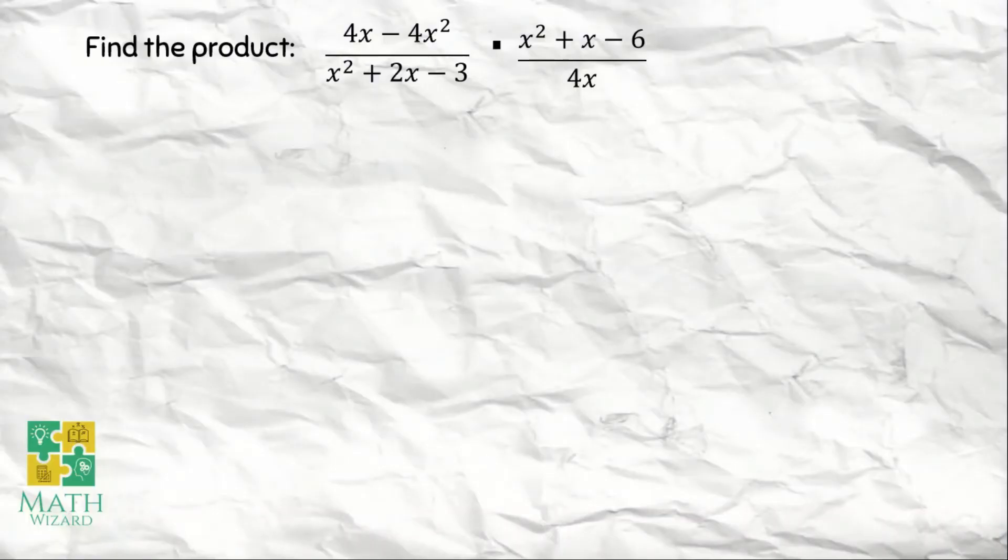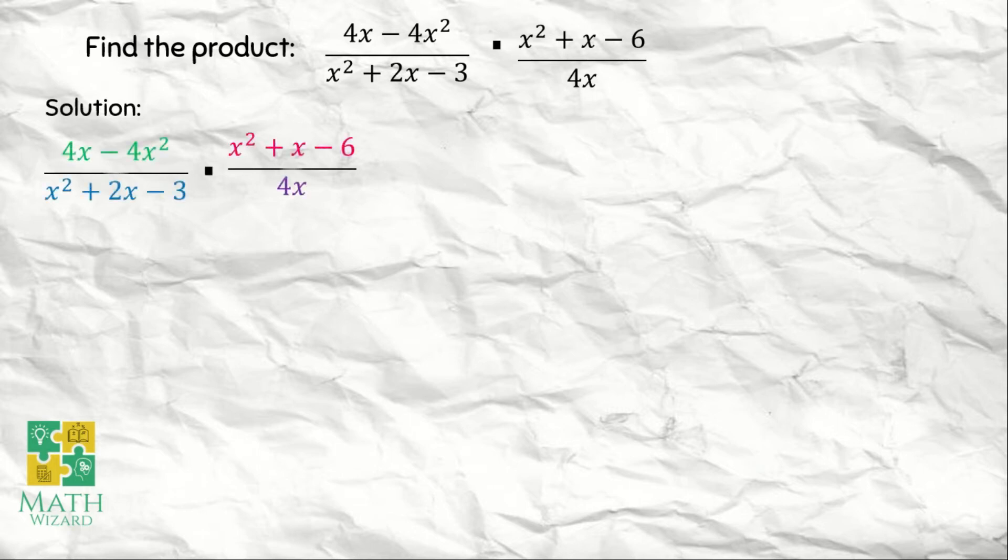Let's have another example. Find the product of 4x minus 4x squared over x squared plus 2x minus 3, and x squared plus x minus 6 over 4x. We write it first. How do we multiply? That's numerator times numerator and denominator multiplied to the denominator. So this becomes the quantity of 4x minus 4x squared multiplied to the quantity of x squared plus x minus 6 over the quantity of x squared plus 2x minus 3 times 4x.